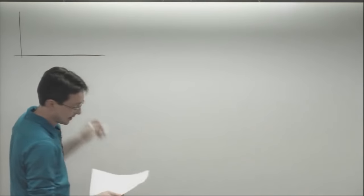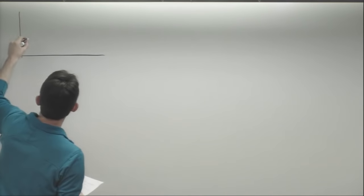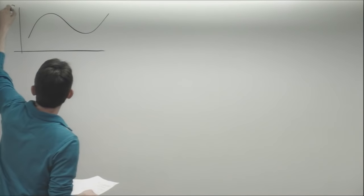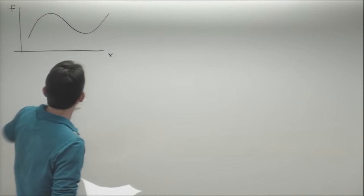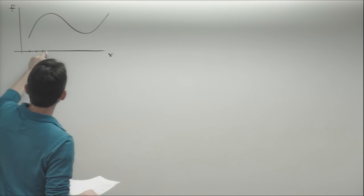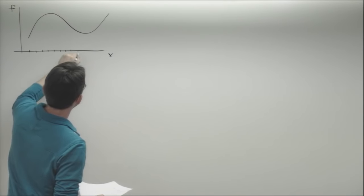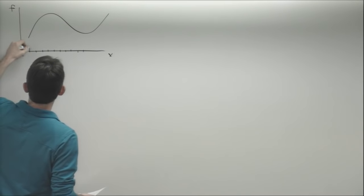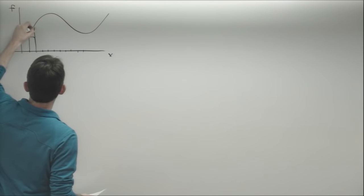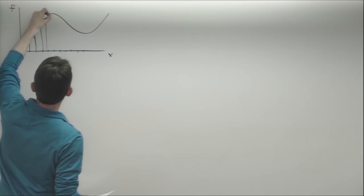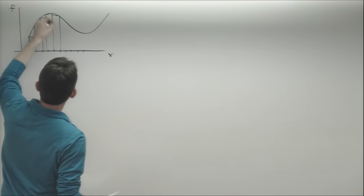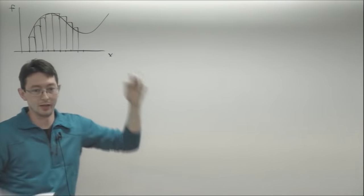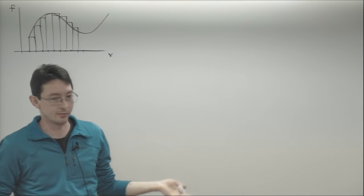So last time we saw, just like with numerical differentiation, we can take some function f of x and chop it up into a bunch of finite intervals. We can approximate the area under the curve, or the integral, using the area of all of these finite rectangles. You just add up all these rectangles — it's that simple.